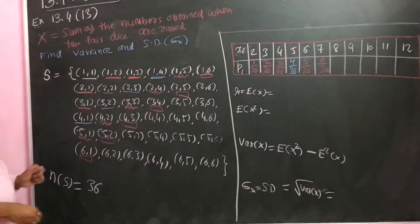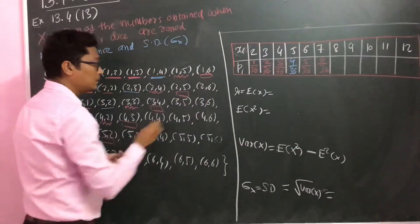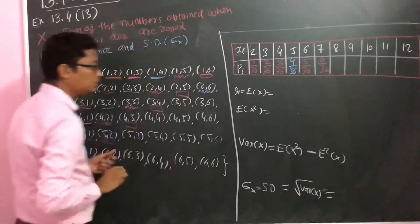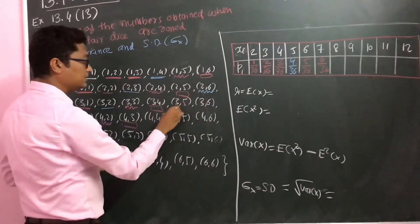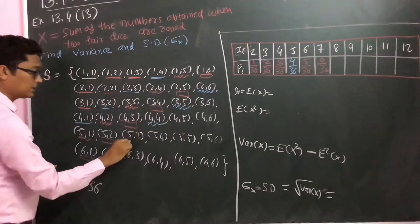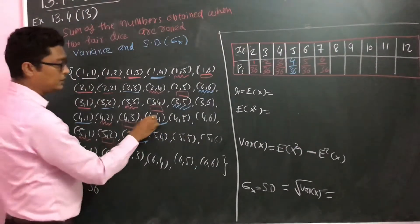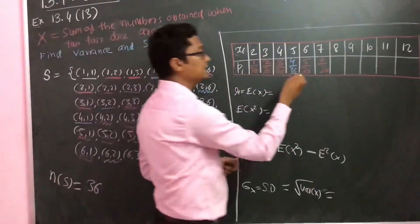Next combination is 8. We have 2-6, 3-5, 4-4, 5-3, and 6-2. That's 1, 2, 3, 4, and 5. So 5 by 36, and now it is decreasing.